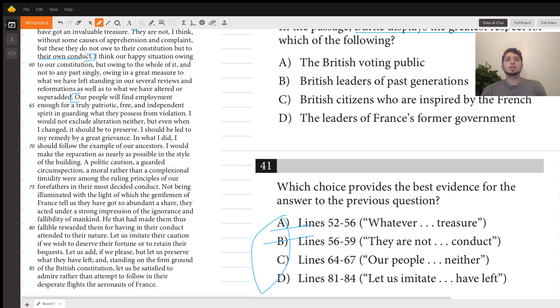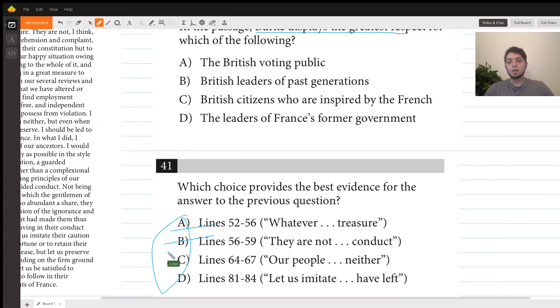Basically he's saying to the British that you'll find enough to do just by guarding the constitution and our principles from violation. So yes, all this activity and energy of the French may be interesting, charismatic, attractive, but he's saying to the British you're gonna find enough employment to be patriotic, free, and independent if you just focus on guarding the constitution. Then he ends by saying he wouldn't exclude alteration either.